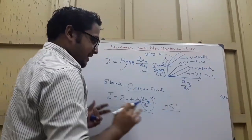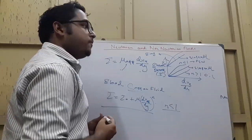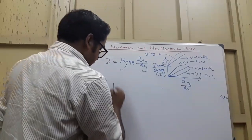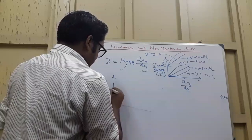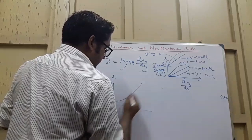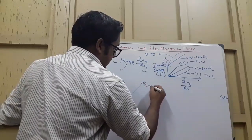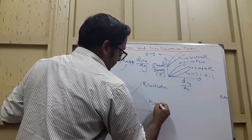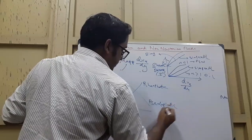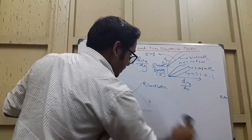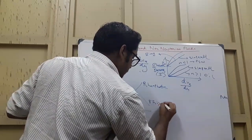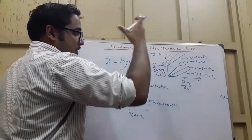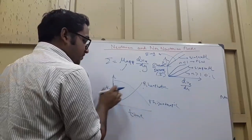Another dependence of apparent viscosity is with time. If apparent viscosity increases with time at a constant shear strain rate, it is a rheopectic (shear thickening with time) fluid. If it decreases with time, it is thixotropic (shear thinning with time). This represents the time-dependent viscosity behavior of non-Newtonian fluids.